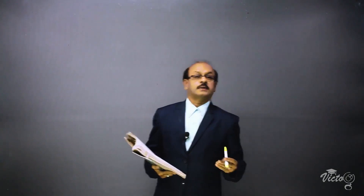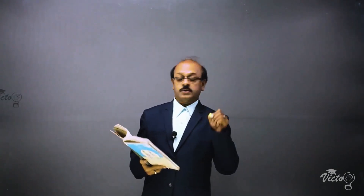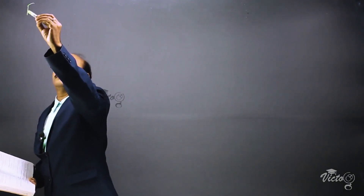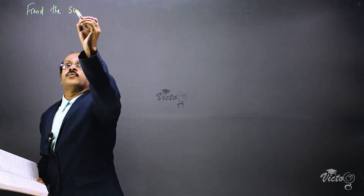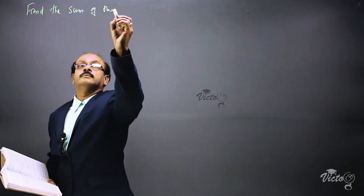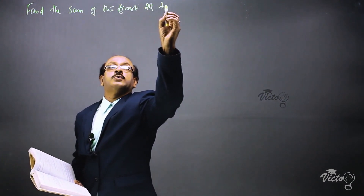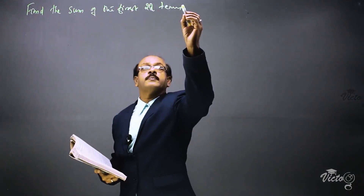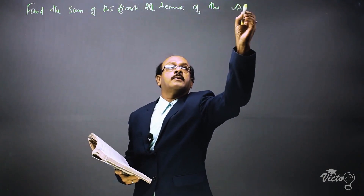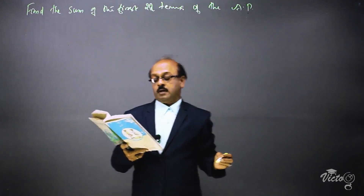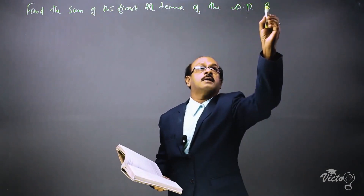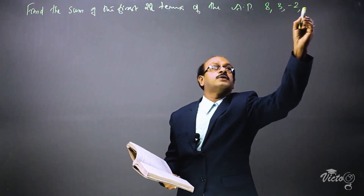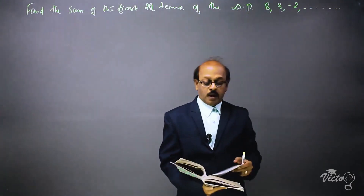We are going to find out the sum of n terms of an AP. The question: find the sum of the first 22 terms of the arithmetic progression 8, 3, -2, and so on.